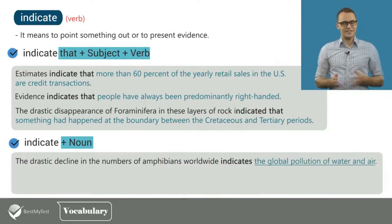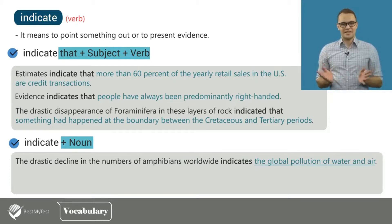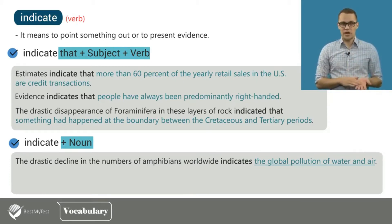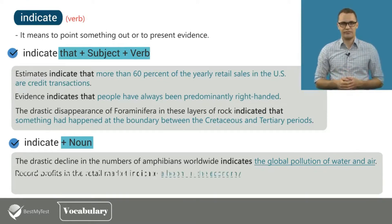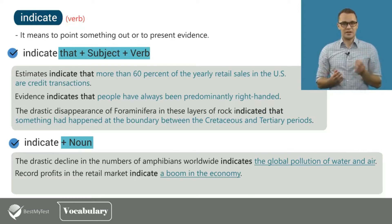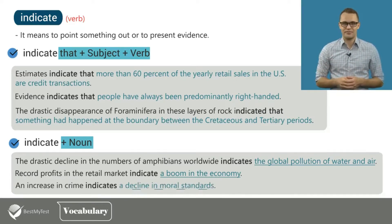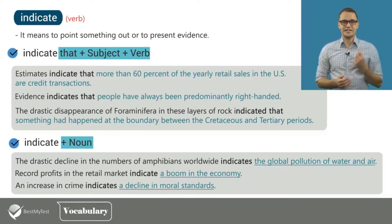Here are example sentences using the second pattern. The drastic decline in the numbers of amphibians worldwide indicates the global pollution of water and air. Record profits in the retail market indicate a boom in the economy. An increase in crime indicates a decline in moral standards.